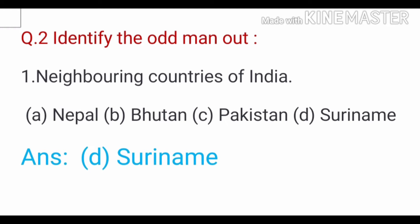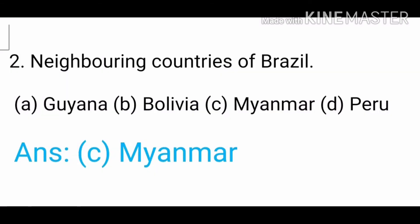Question number two: identify the odd man out. First question — neighboring countries of India. Options are Nepal, Bhutan, Pakistan, Suriname. Answer: Suriname. As you all know, Nepal, Bhutan, and Pakistan are the neighboring countries of India. Next question — neighboring countries of Brazil. Options are Guyana, Bolivia, Myanmar, Peru.